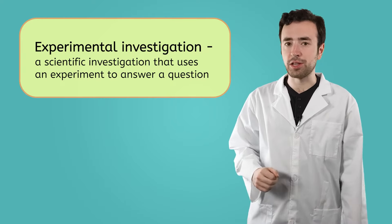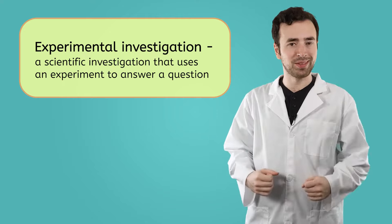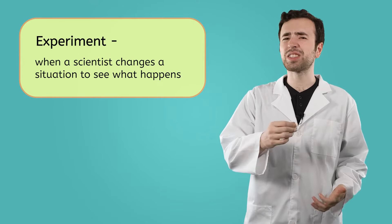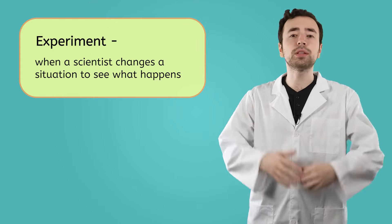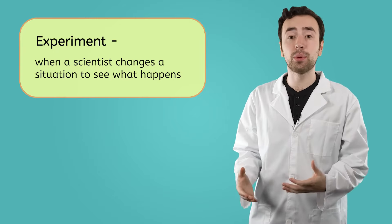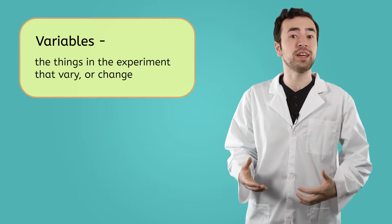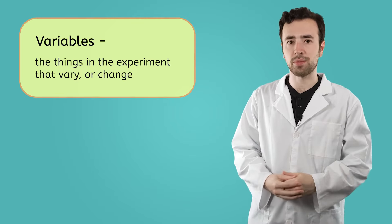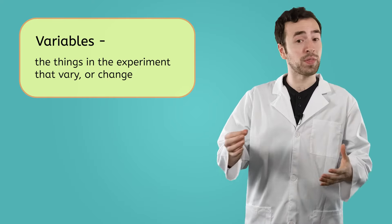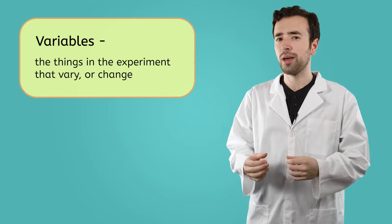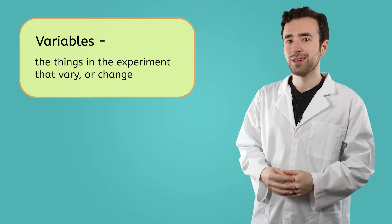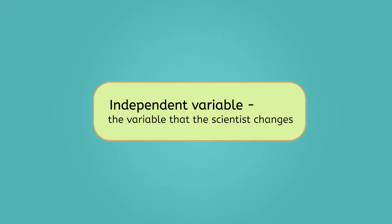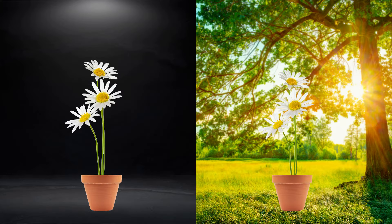An experimental investigation is a scientific investigation that uses an experiment to answer a question. These experiments are when scientists change something to see what will happen. Experiments usually have two major parts: the variables and the controls. The variables are the things that vary or change during the experiment — they can change because they're what the scientist is trying to test, or they could change because of the other variables. The variable that the scientist changes is called the independent variable. If I took one of my daisy plants into a dark room and left one out in the sunlight, then the amount of light they're getting would be the independent variable because I changed it.